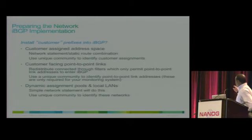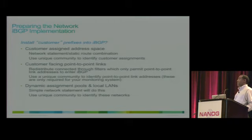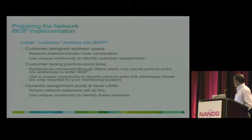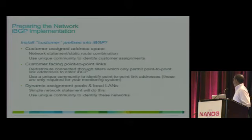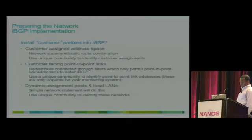Installing customer prefixes: if you have a customer assigned address space, you can use a network statement to inject those prefixes. You can use a unique community to make sure those prefixes are not advertised outside your network. If advertised from your own address space, you don't want to advertise the specific routes to other service providers. The customer-facing point links can be injected into IBGP using next-hop-self instead of putting them in IGP.